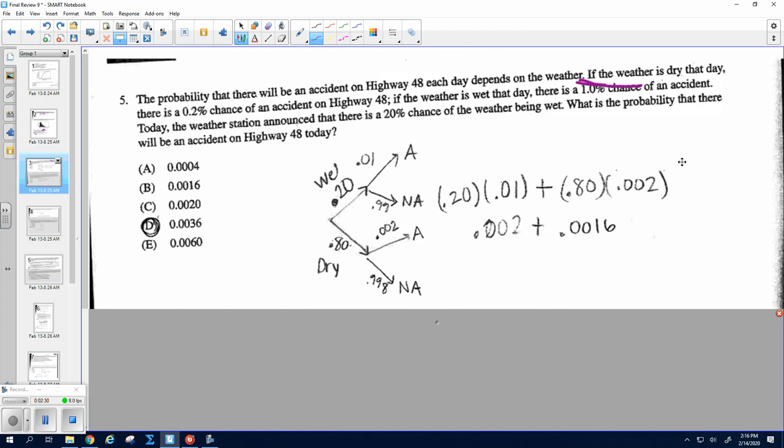What's the probability of an accident? So there's two paths to get to accident here, and we're going to multiply this times this, and then we add for our OR, this times this, and that gives you D.